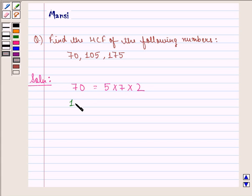Similarly 105 can be expressed as 5 into 7 into 3 and 175 can be expressed as 5 into 5 into 7.